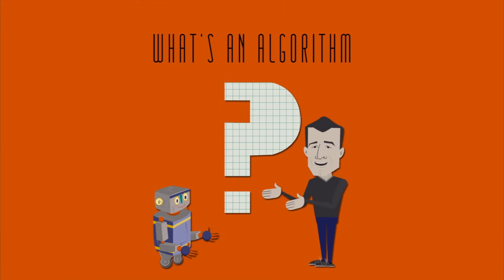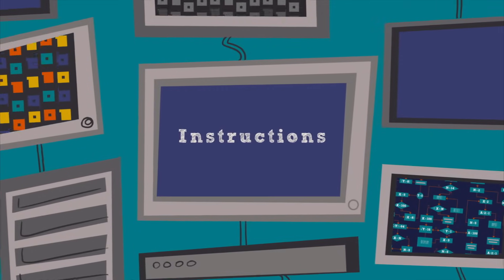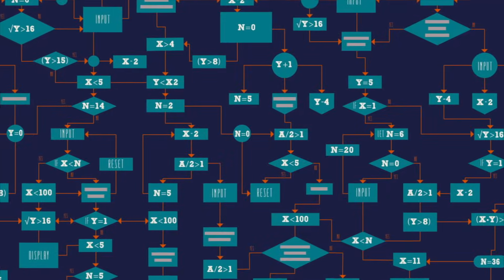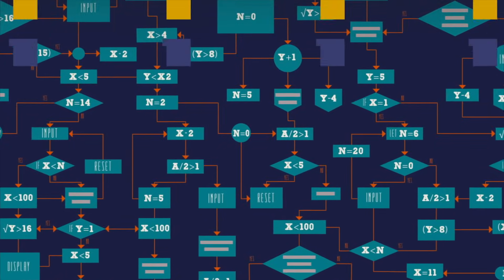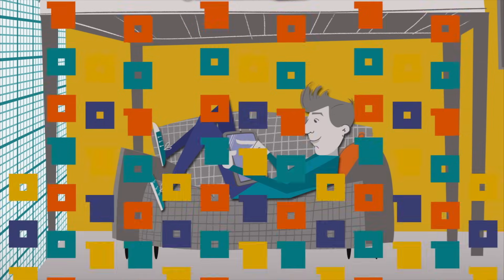What's an algorithm? In computer science, an algorithm is a set of instructions for solving some problem step by step. Typically, algorithms are executed by computers, but we humans have algorithms as well.